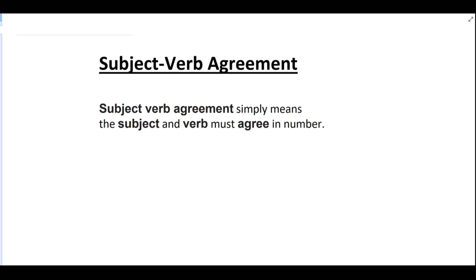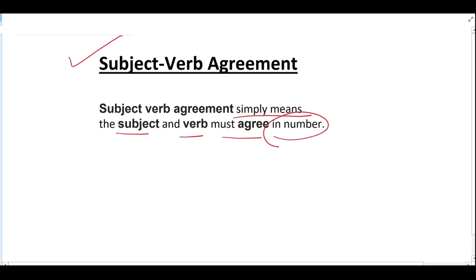Today we are going to talk about subject-verb agreement. Subject-verb agreement simply means the subject and the verb must agree in number. This topic is very important — if we do not use subject-verb agreement properly, the reader, listener, or speaker might be confused. There are simple rules we have to keep in mind while reading, listening, and writing.